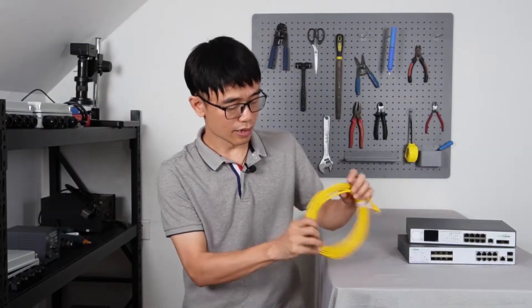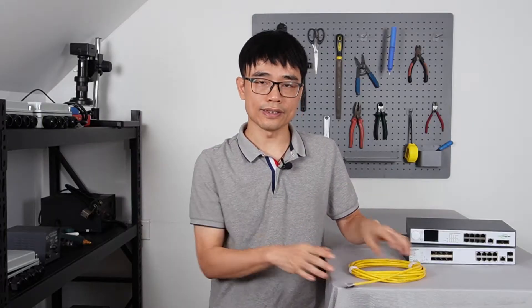In some applications, we may need to connect one switch to another, such as when we have a new setup in a new location. Usually we can use a CAT6 Ethernet cable like this one to connect two switches. In this video, I'm going to show you how we can use fiber optic cable to connect one network switch to another.